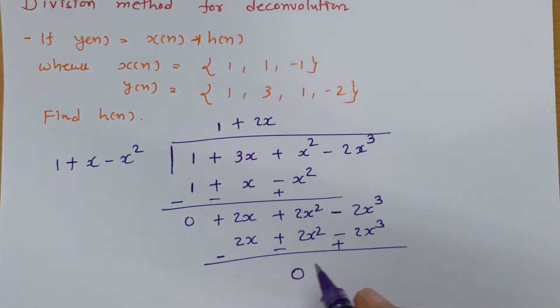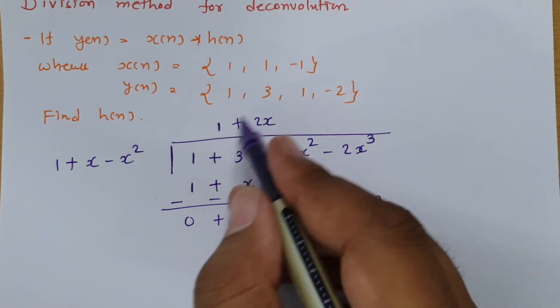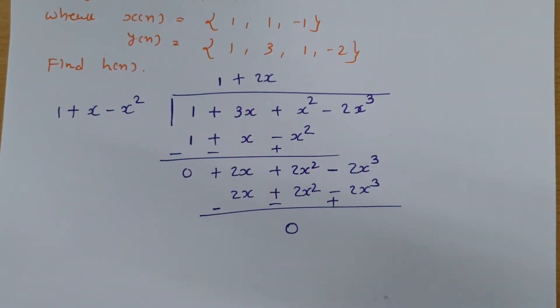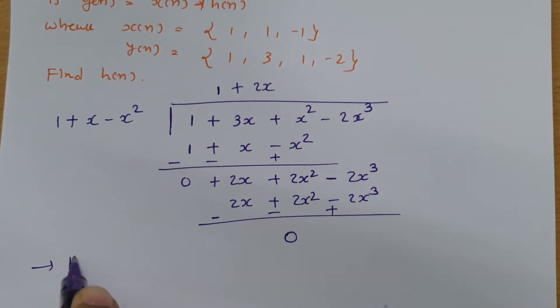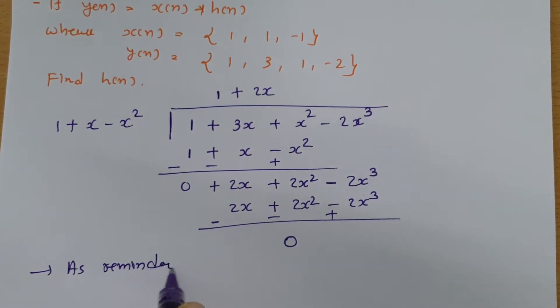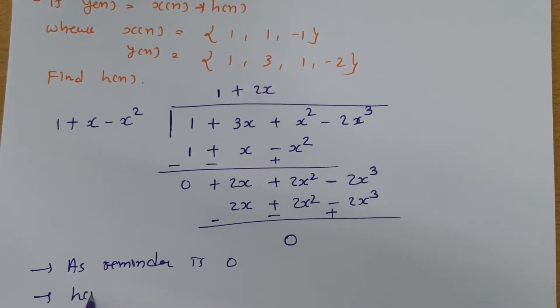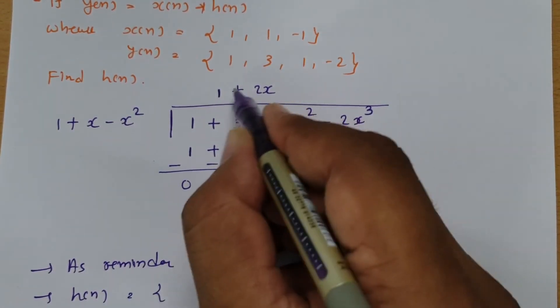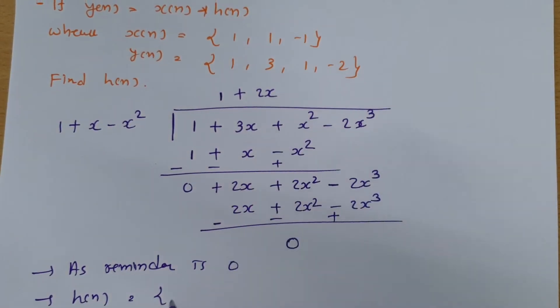So we can say h(n) is this polynomial. As remainder is 0, h(n) is this polynomial: h(n) = {1, 2}.